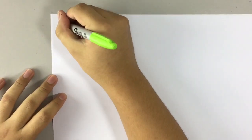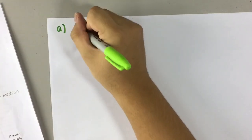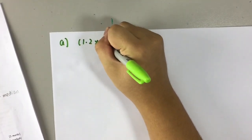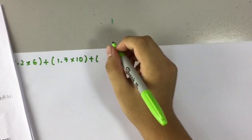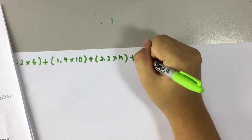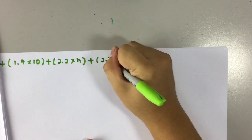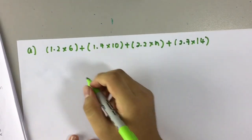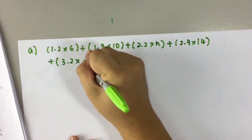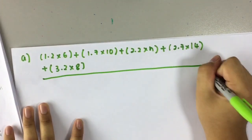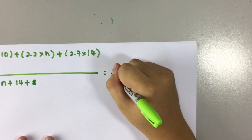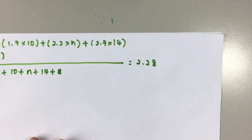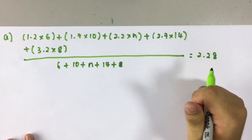1.2 times 6 plus 1.7 times 10 plus 2.2 times n plus 2.7 times 14 plus 3.2 times 8 over sum of total frequency 6 plus 10 plus n plus 14 plus 8 equals to the mean mass given 2.8. So this is the working and first simplified numerator and denominator.